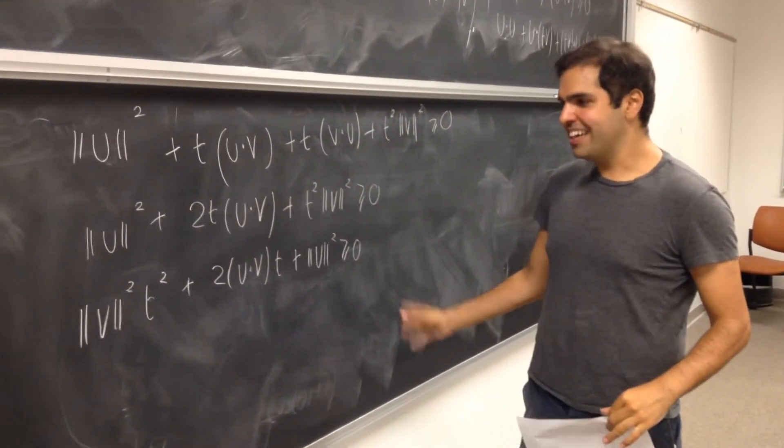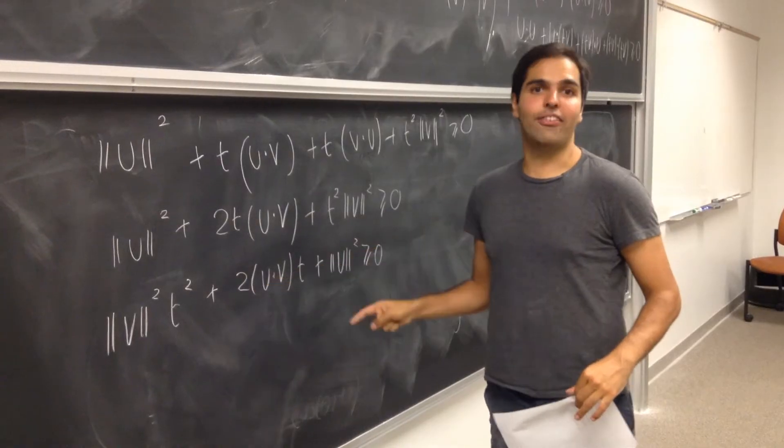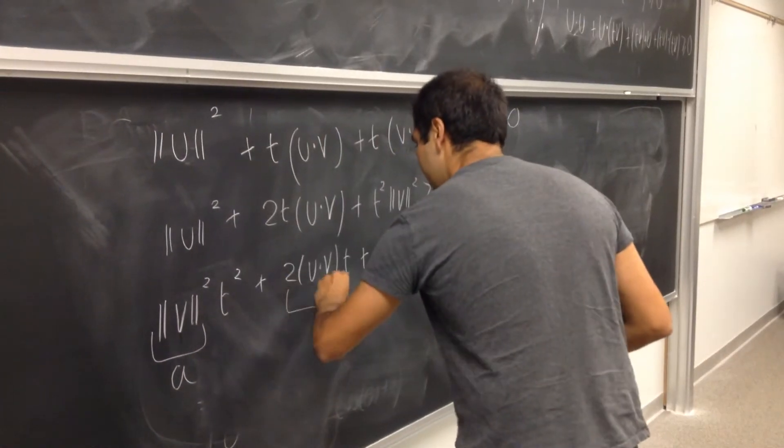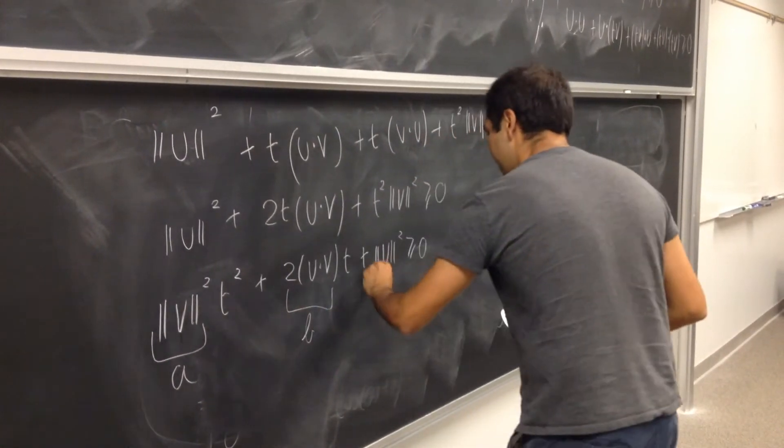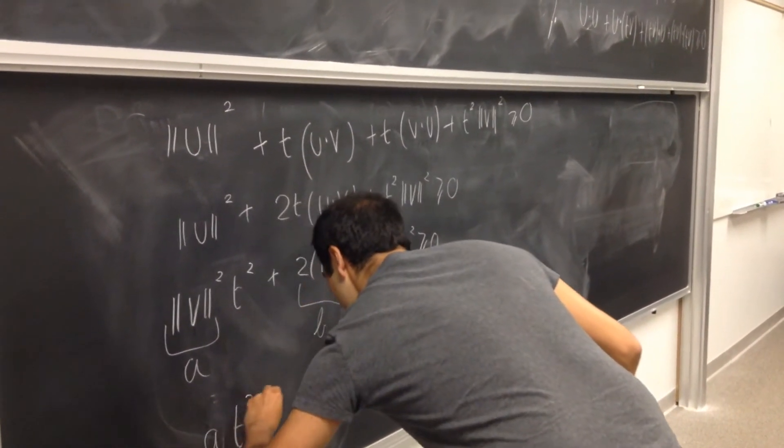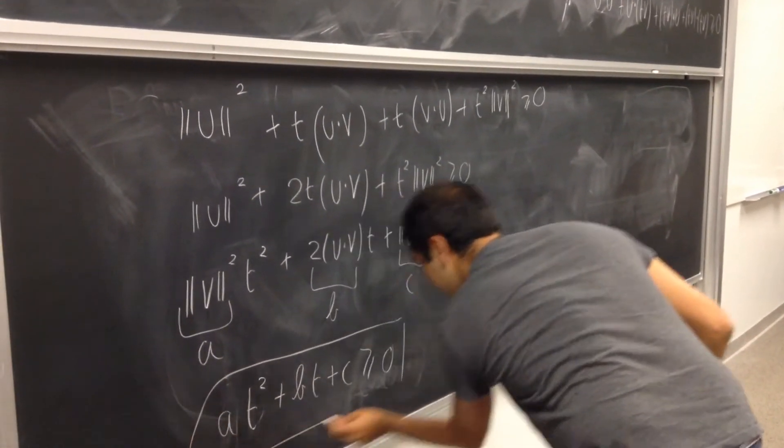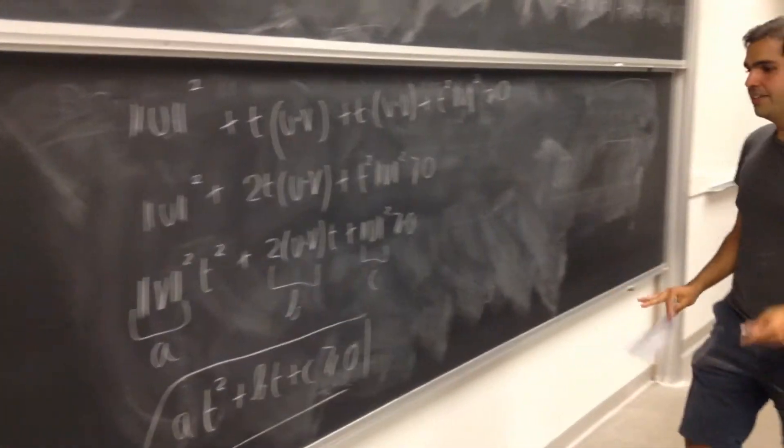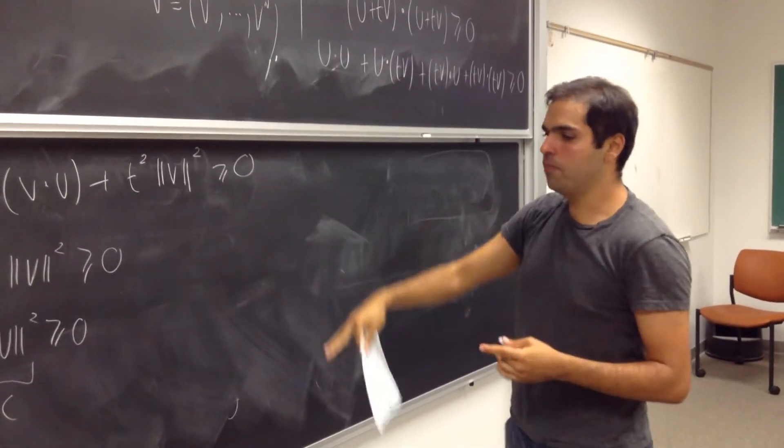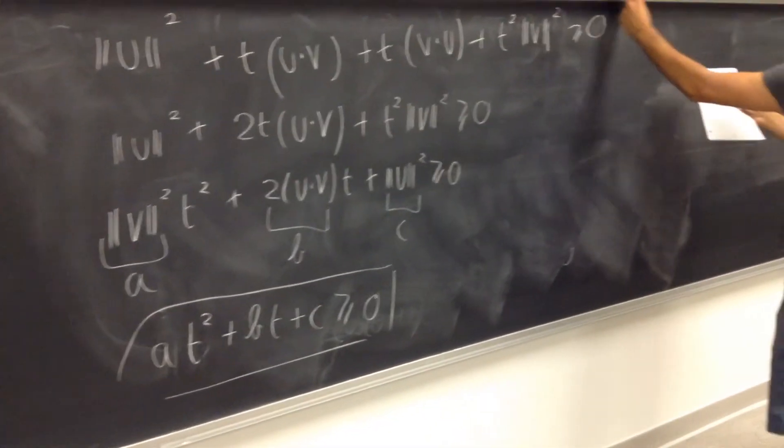if you think of u and v as frozen, this is actually just a quadratic equation in t. More precisely, if you let this to be a, this to be b, and this to be c, then all you get is at squared plus bt plus c is greater or equal to zero. That's really great because we took this linear algebra slash analysis problem and we turned it into an algebra problem using polynomials.